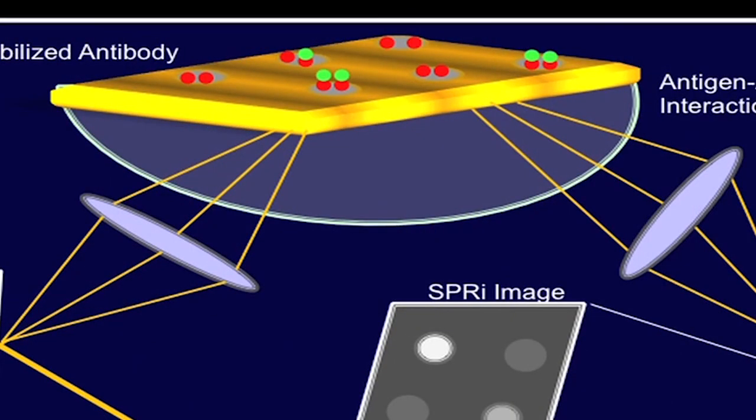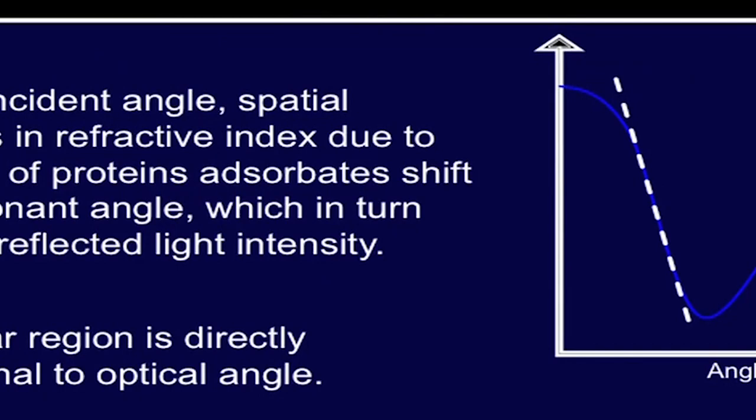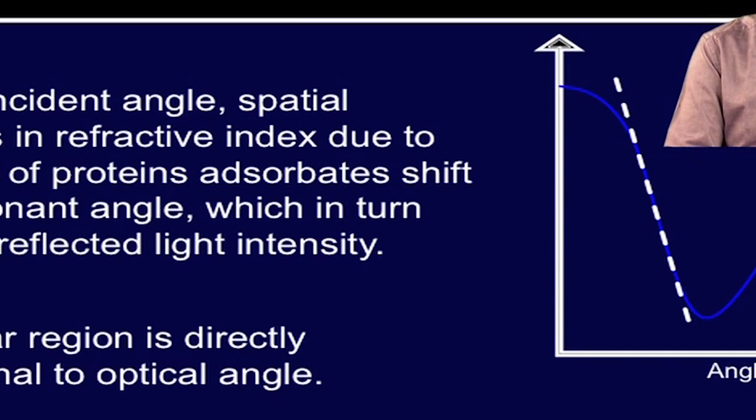In this slide, a setup of SPR imaging is shown. The configuration illustrates that light from a collimated polychromatic source passes through a polarizer and impinges on the prism or gold interface at a specific angle of incidence. As we can see here, there is a gold surface, the prism, and the light source. Now, the reflected light passes through the narrow band interference filter and is detected by the CCD camera. Therefore, at a fixed incident angle, the spatial variations in refractive index due to the presence of protein or other molecule adsorbates shift the local resonant angle, which in turn changes the reflected light intensity.